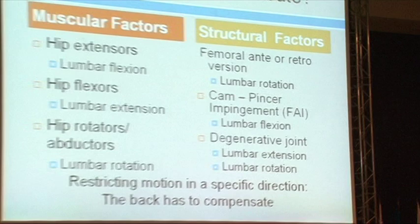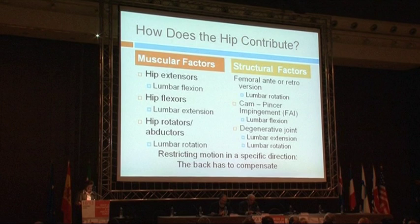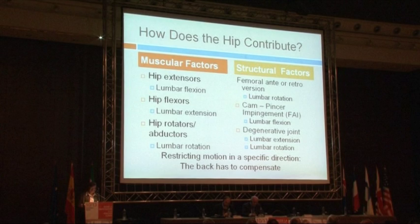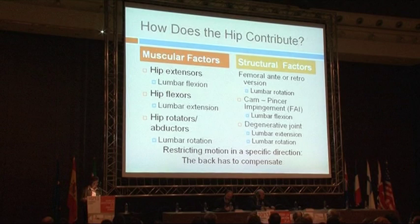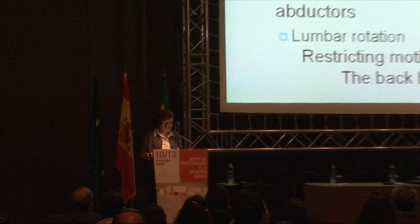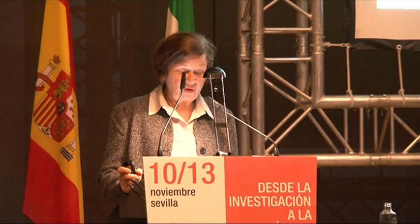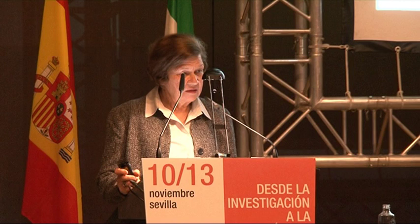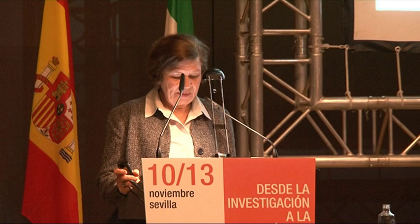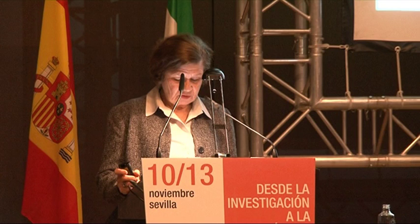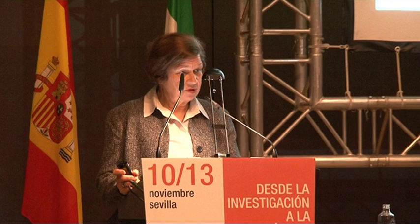How does the hip contribute? Muscular factors: if your hip extensors are somewhat stiff or short, it'll contribute to lumbar flexion. If your hip flexors do not elongate readily enough, you'll have lumbar extension. And if your hip rotators, like the tensor fasciae latae iliotibial band, are stiff and don't extend, you can get lumbar rotation problems. The structural factors are femoral anti- or retroversion, which will give you lumbar rotation, and structural variations called CAM or pincer impingement problems, which contribute to lumbar flexion. Degenerative hip joint disease will cause the back to both extend and rotate too easily.